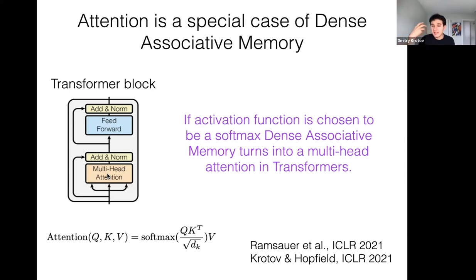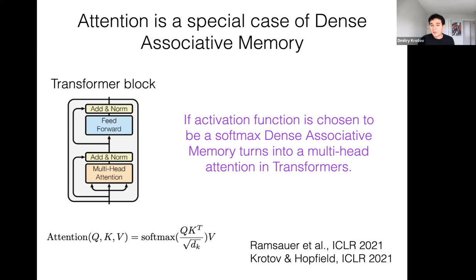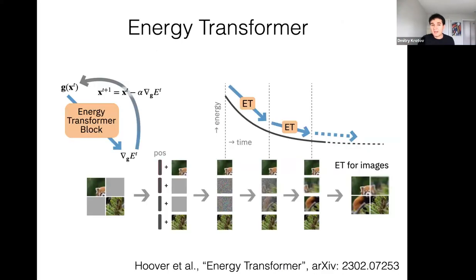It's very tempting to think about large language models as gigantic associative memories — basins of attraction for financial markets, for algebraic operations, for different topics. Providing a prompt places the network in one of those basins of attraction, after which it becomes fluent on that specific topic. There is even a more precise mathematical correspondence between the self-attention operation and associative memories.